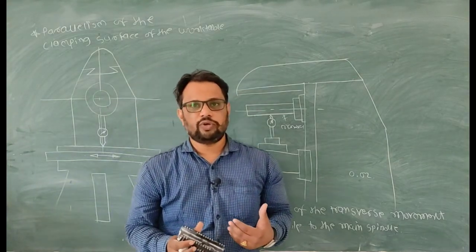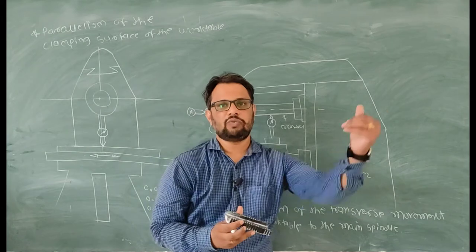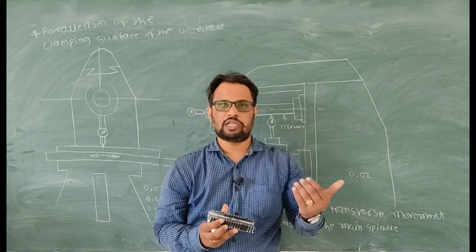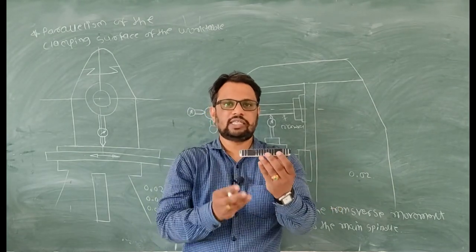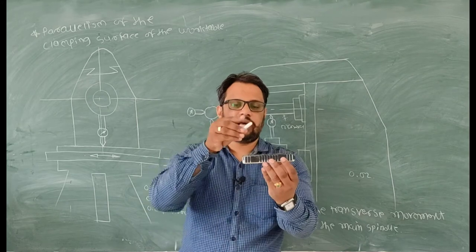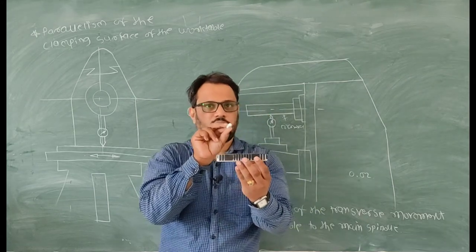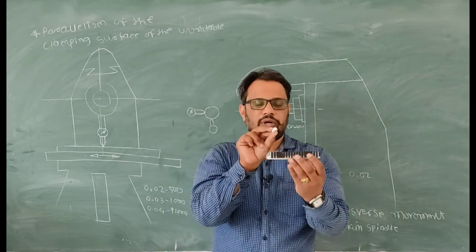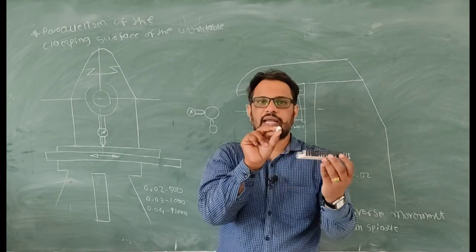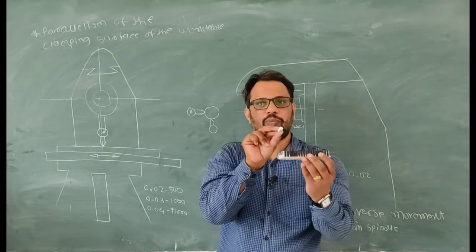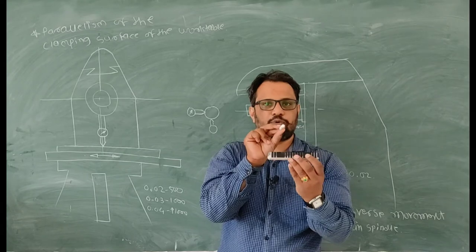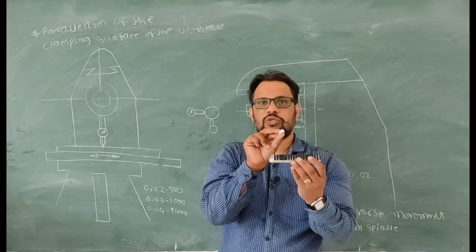So first of all you have to know what is the longitudinal movement and transverse movement in milling machine. Consider that this is your milling machine table and the chalk is your milling arbor. If the table travels in this direction, this is your longitudinal movement, and if the table travels in this position, this is your transverse movement.